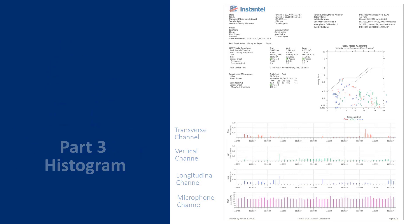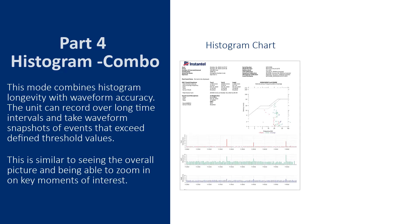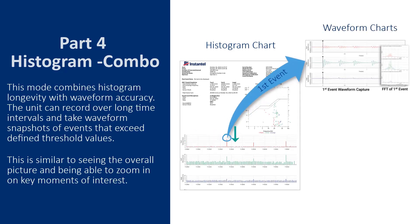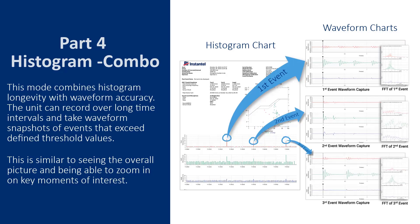The fourth record mode is Histogram Combo. This mode combines histogram longevity with waveform accuracy. The unit can record over long time intervals and take waveform snapshots of events that exceed defined threshold values.